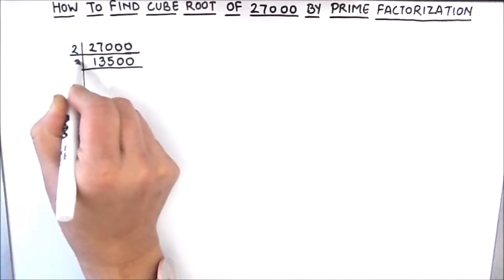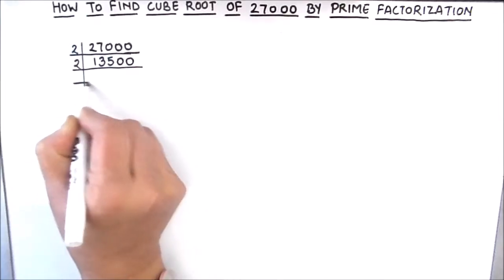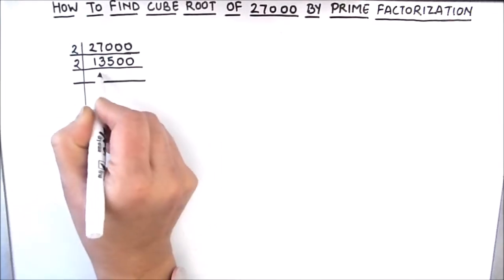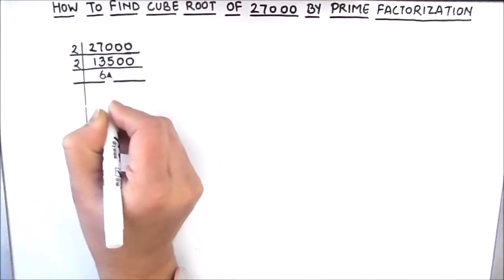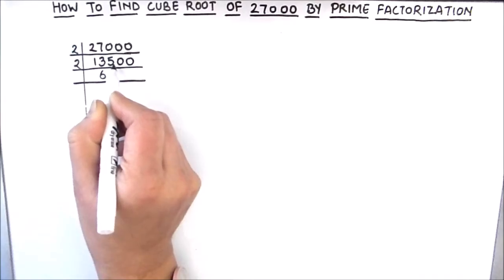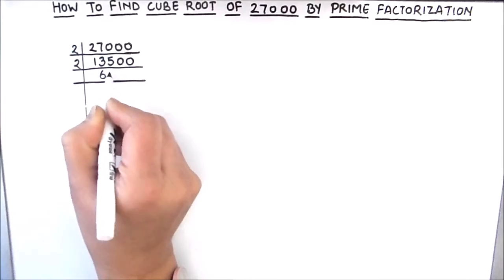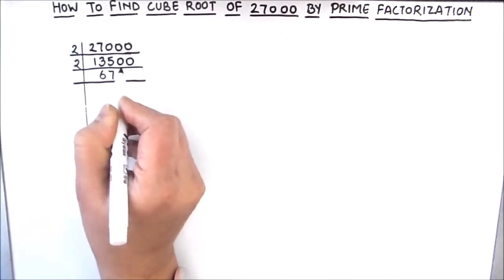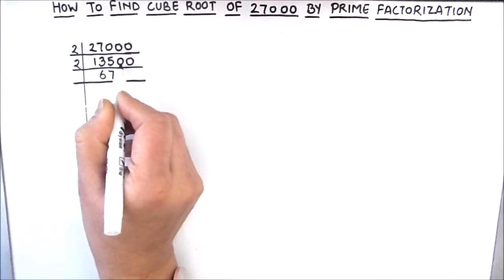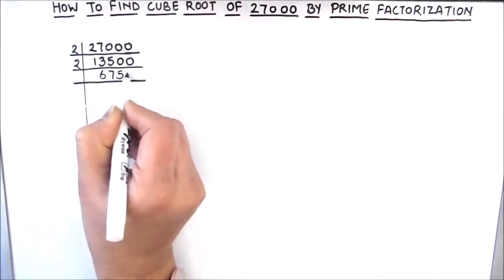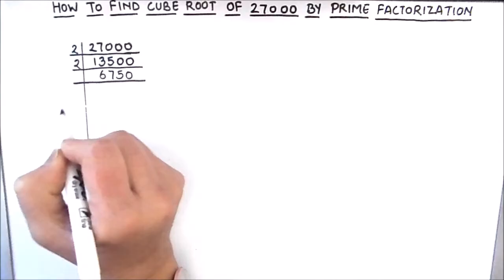This is again an even number, so it can easily be divided by 2. 2 times 6 is 12, 1 is carried over this becomes 15, 2 times 7 is 14, 1 is carried over this becomes 10, 2 times 5 is 10 and 2 times 0 is 0. So 13500 divided by 2 gives us 6750.